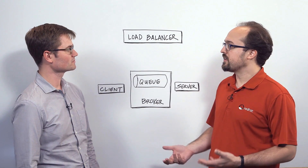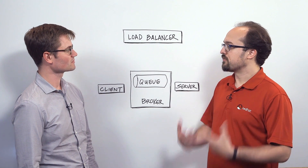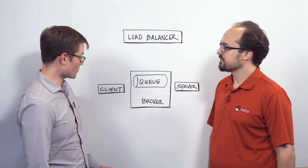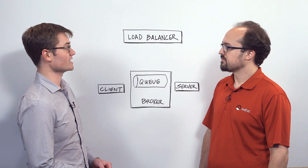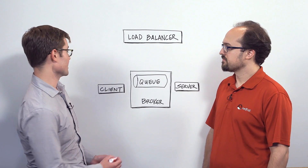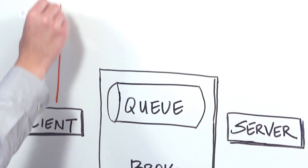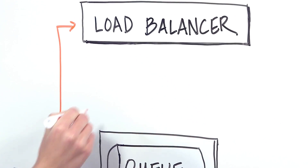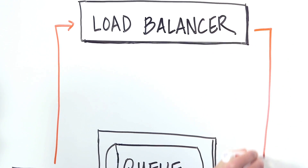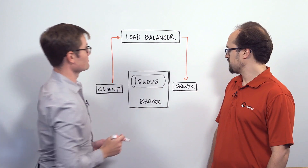Before getting into AMQ7, could you give me a rundown of how microservices communicate today? Microservices can either communicate synchronously or asynchronously. In the synchronous case, our client is usually sending communications with HTTP through a load balancer, which is then processed by our server.